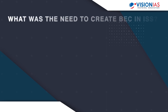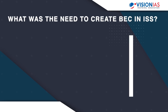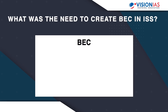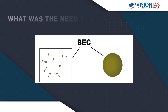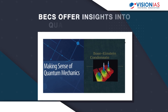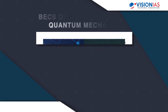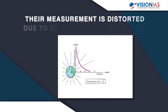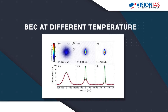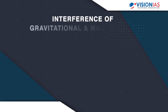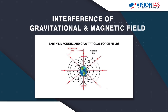So what was the need to create them in the microgravity of the International Space Station? Bose-Einstein condensates straddle the line between the macroscopic world governed by forces such as gravity, and the microscopic plane ruled by quantum mechanics, offering fundamental insights into quantum mechanics. But their measurement is distorted by the effect of gravity on Earth. Bose-Einstein condensates are extremely fragile, and the slightest interaction with the external world warms them past their condensation threshold, making their study nearly impossible on Earth, where gravity also interferes with the magnetic fields required to hold them in place for observation.